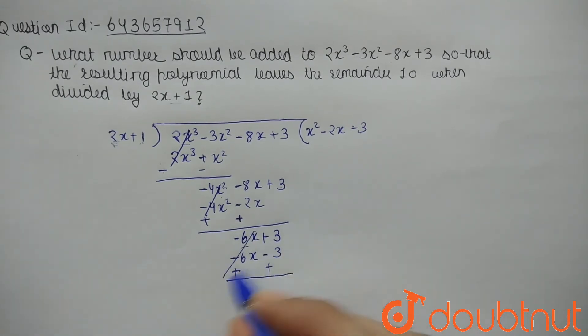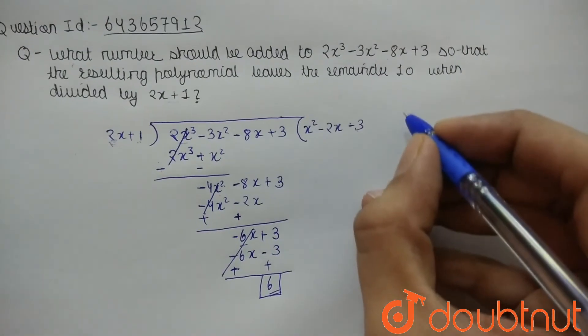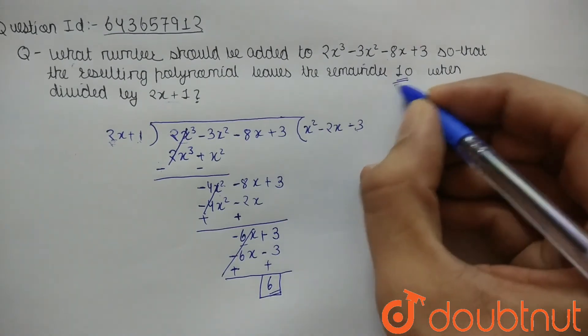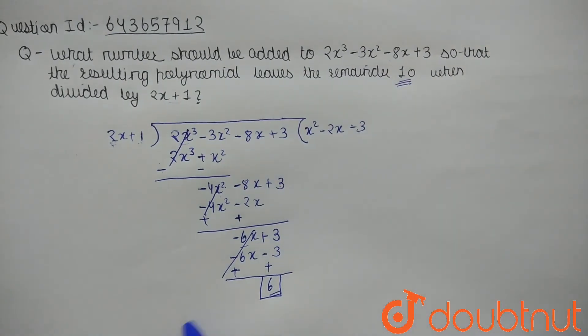So our remainder is coming as 6, but what we need is remainder should be 10. So what should be added to 6 to make it 10? Obviously 4. So 4 should be added.